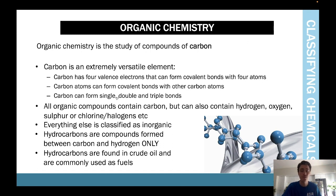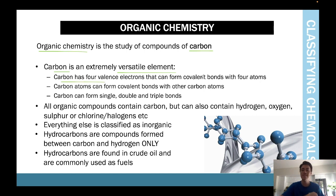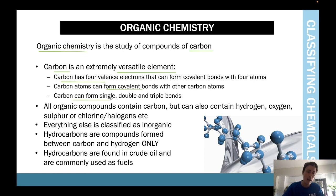Organic chemistry is the study of compounds with carbon. Carbon is an extremely versatile element — it has four valence electrons, which means it can lose or gain four. It can form covalent bonds with other carbon molecules and can form single, double, or triple bonds. All organic compounds contain carbon but can also contain hydrogen, oxygen, sulfur, chlorine, halogens, and lots of other things. Everything else is classified as inorganic — if it doesn't have carbon, it's inorganic.